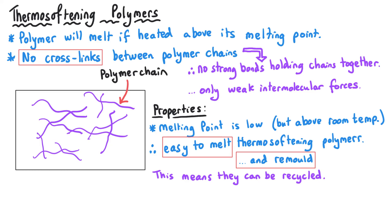This lack of cross-links affects other properties of the polymer. Typically, they are more flexible and less rigid in their nature, and that makes them useful for things such as carrier bags or anything that needs to have more give in it in order for it to perform its function.